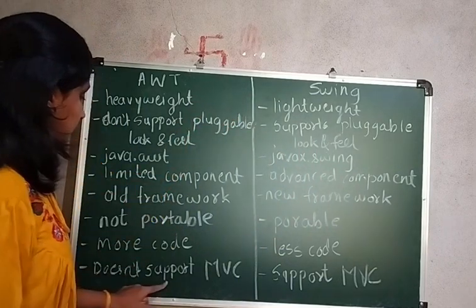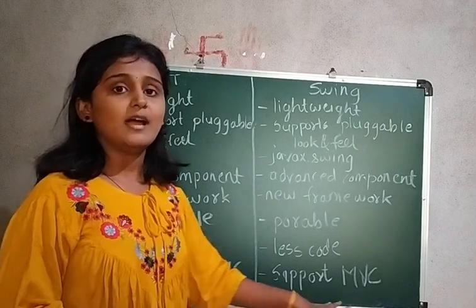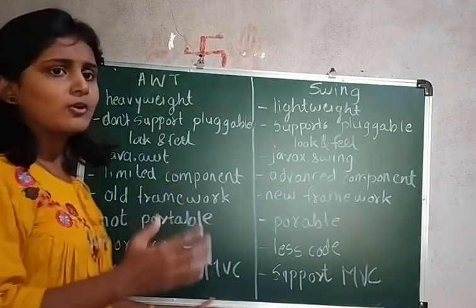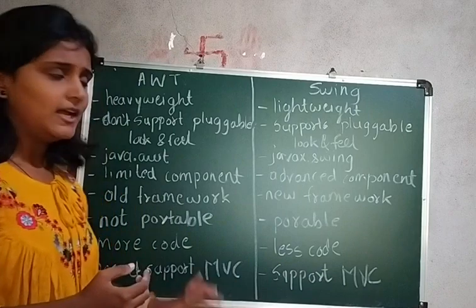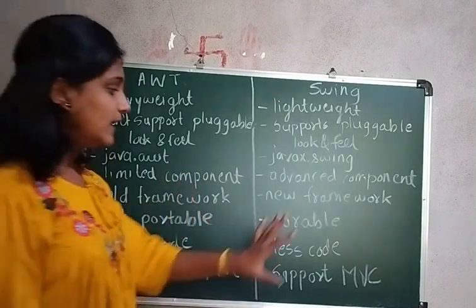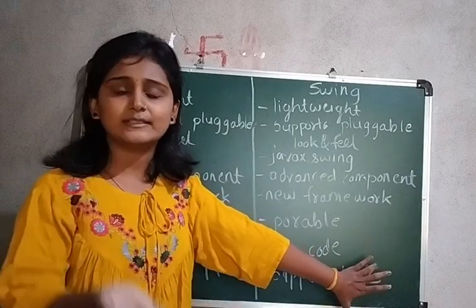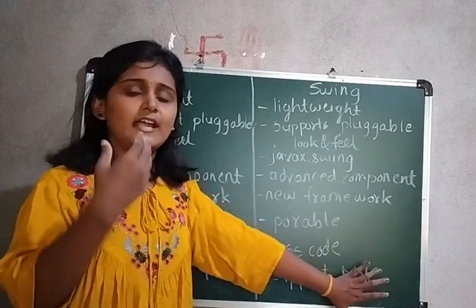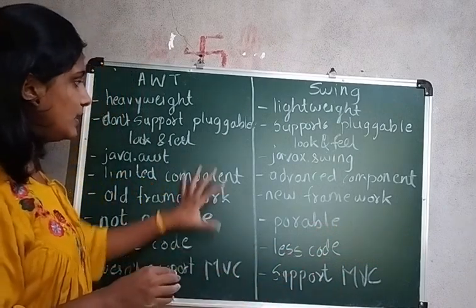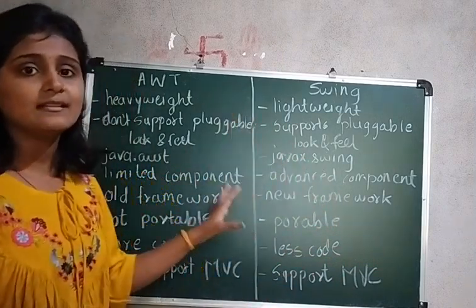The next difference is MVC support. AWT does not support MVC, whereas Swing supports MVC — that is Model View Controller. We are going to cover MVC in the next tutorials. Just remember: AWT does not support MVC, Swing supports MVC.